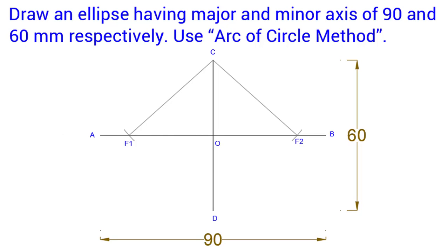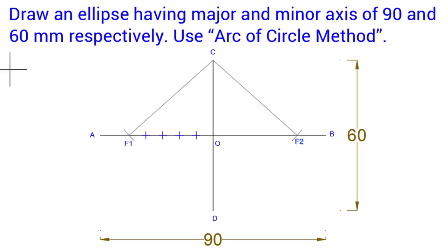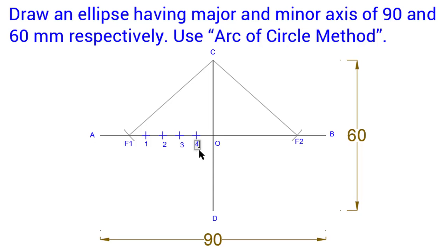After that, we will divide the line between F1 and F2 into five equal parts and name those points accordingly.